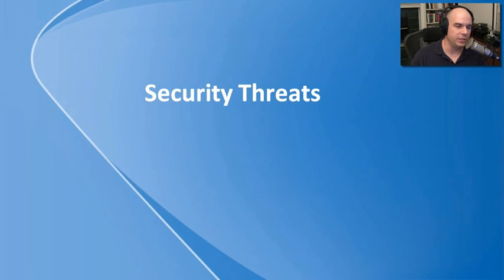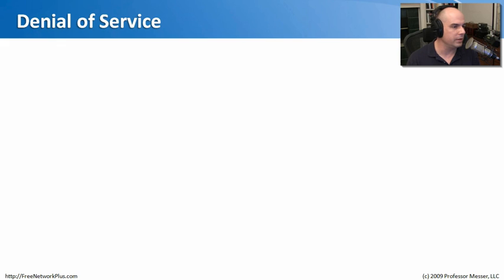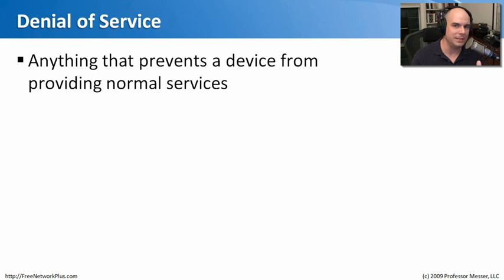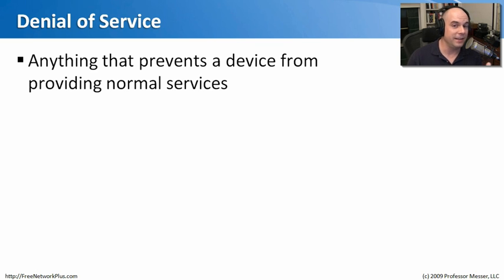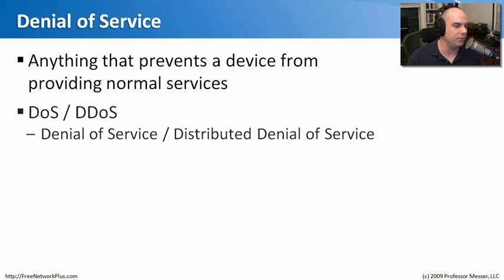One common security threat you see a lot these days is denial of service. A denial of service is anything that happens to a device that prevents it from providing normal services. There could be technology-based denials of service or physical-based ones. If I cut the power to a building, that is essentially a denial of service. If I find a vulnerability to a server that hangs up the operating system, that's also a denial of service. A DoS can take many different forms.